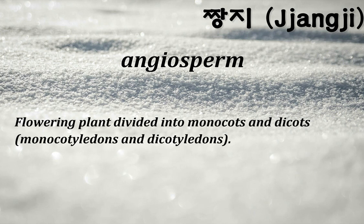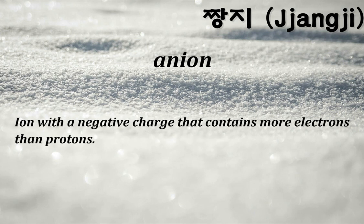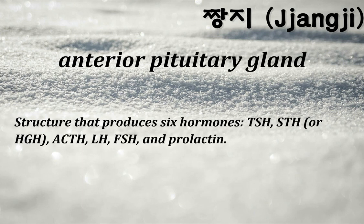Angiosperm: a flowering plant divided into monocots and dicots — monocotyledons and dicotyledons. Anion: an ion with a negative charge that contains more electrons than protons. Anterior pituitary gland: a structure that produces six hormones — TSH, STH or HGH, ACTH, LH, FSH, and prolactin.